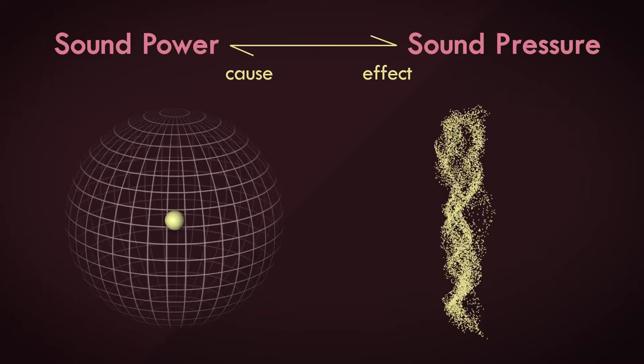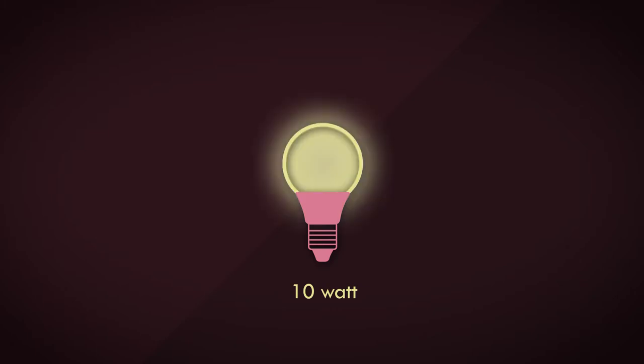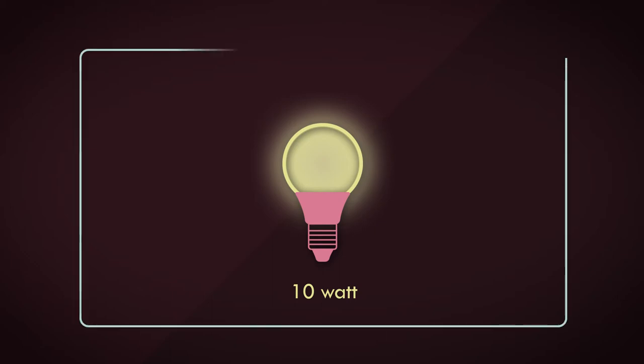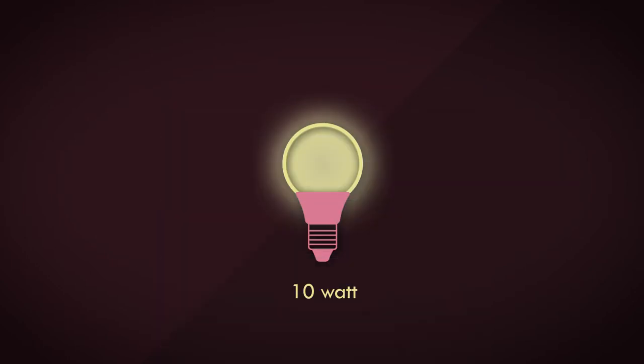We previously looked at a heater analogy, but this time let's look at light. A light bulb is rated to some electrical power. An LED light rated to a power of 10 watts produces some amount of light. It doesn't matter whether the 10 watt LED light is in a small room or a large room or in a closed box. The 10 watt rating will remain the same wherever the bulb may be.